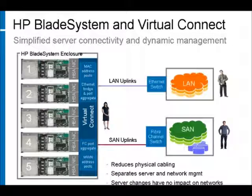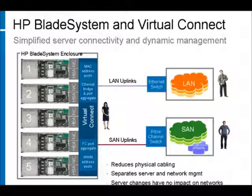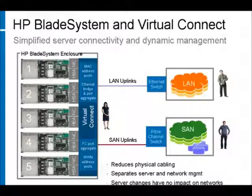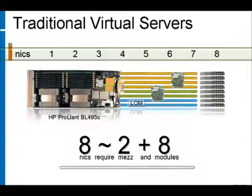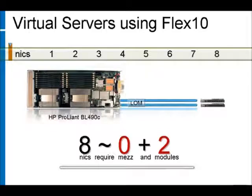Let's take a look at a traditional virtual server environment. In most virtualized environments, virtual servers need additional NICs to accommodate the additional consolidated workloads of typical networks, often requiring six to eight NICs per server, which requires additional MEZ cards and interconnects to be added to the blade servers. If we look at the same servers using HP VirtualConnect Flex 10 technology, we can accomplish this without adding additional MEZ cards or interconnects. HP's VirtualConnect Flex 10 technology allows us to take the two onboard 10GB Flex 10 NICs and virtualize them into eight virtual NICs, and we can also throttle the speed of each NIC to customize the bandwidth needed for the environment.